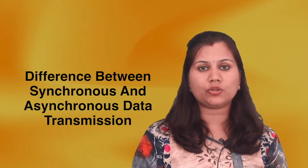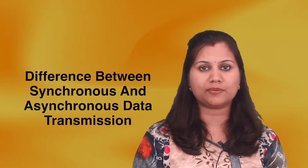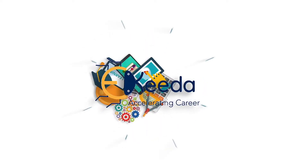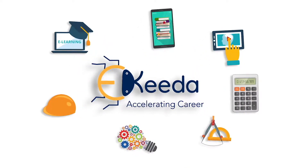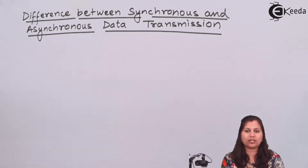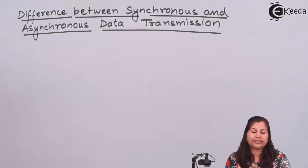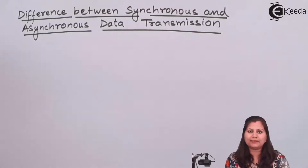Hello friends. In this video we will study the differences between the synchronous and asynchronous data transmission methods. Whenever we talk about the communication between two components, we say that one component is sending the data to another component, or we can say that data transmission is taking place between the two components — exchange of data is taking place. This data transmission can be of two types: serial data transmission and parallel data transmission.